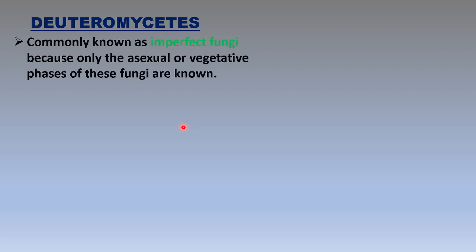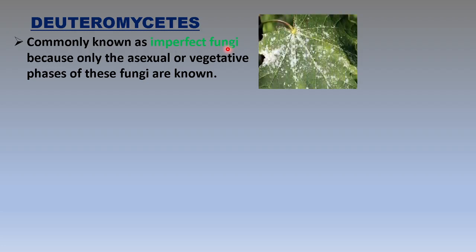The last class is Deuteromycetes, also referred to as imperfect fungi. This is because only the asexual or vegetative phase is known; the sexual phase has not yet been seen or discovered. If during ongoing research the sexual phase of any member of Deuteromycetes is identified, it can be moved out of this class and placed under either Phycomycetes, Ascomycetes, or Basidiomycetes. Until that time, it is kept in Deuteromycetes and called imperfect fungi.